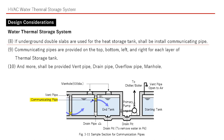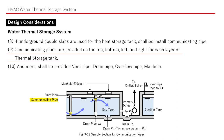We will continue with design considerations. If underground double slabs are used for the heat storage tank, shall we install communicating pipes? Communicating pipes are provided on the top, bottom, left, and right for each layer of the thermal storage tank.